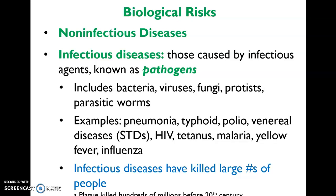Infectious diseases are defined as those caused by an infectious agent known as a pathogen. Pathogens come in many forms. They can be bacteria, which are single-celled organisms without a true nucleus — their DNA is just loose inside, but they do have DNA. Viruses are a pathogen but technically not considered living because they only have RNA and DNA, and they depend on the DNA of other organisms in order to multiply. Fungi include things like toenail fungus and jock itch.